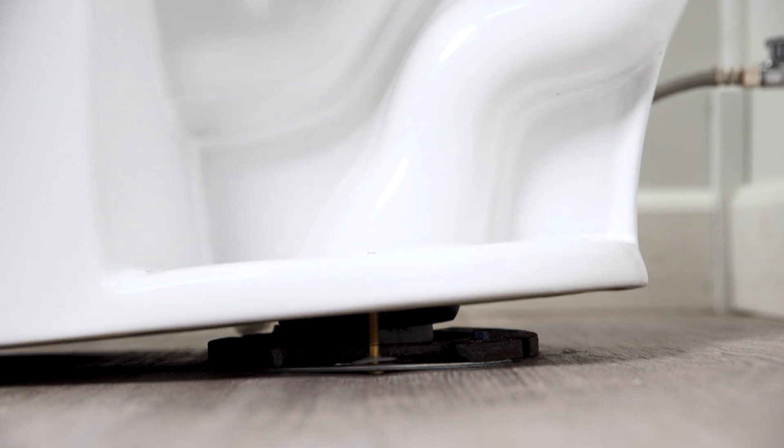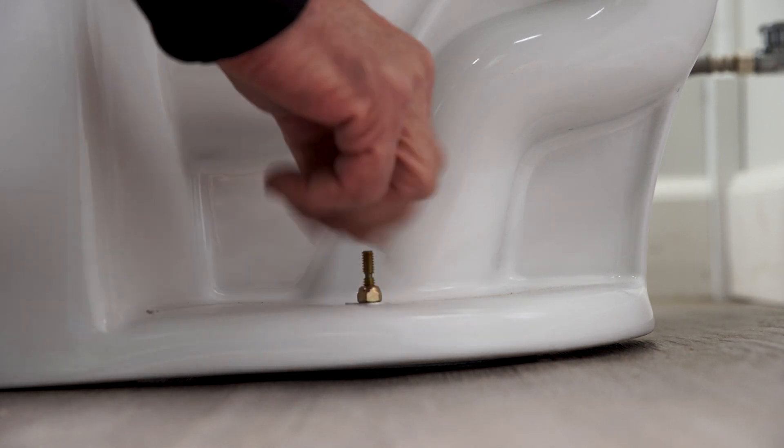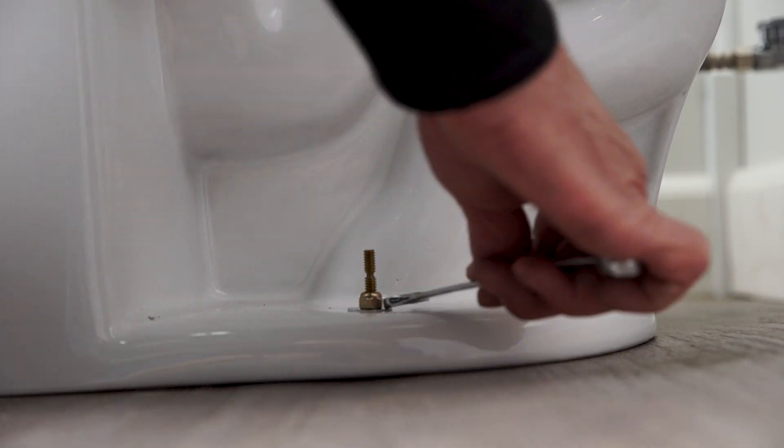Lower the new toilet down onto the closet flange. Using the included washers and nuts, tighten down the toilet bowl and install the tank according to the manufacturer's specifications.